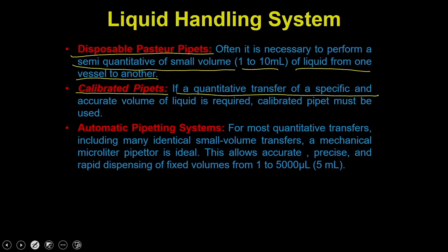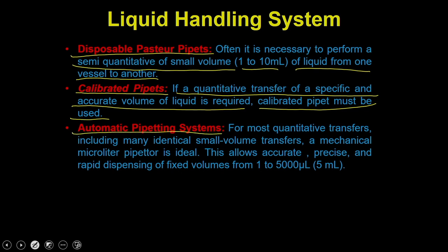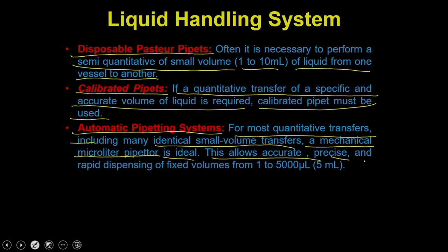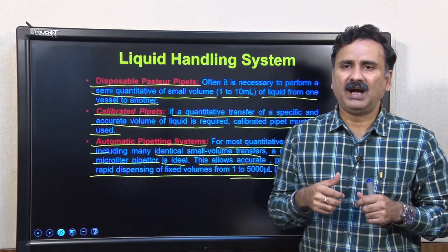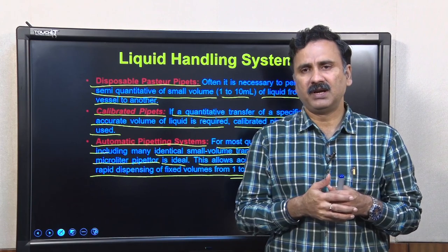If a quantitative transfer of a specific and accurate volume of liquid is required, you can use the calibrated glass pipettes. Apart from the calibrated pipette, you also have the automatic pipetting system. For most quantitative transfers, including many identical same-volume transfers, a mechanical microliter pipette is ideal. This allows accurate, precise, and rapid dispensing of fixed volumes from 1 to 5 ml.